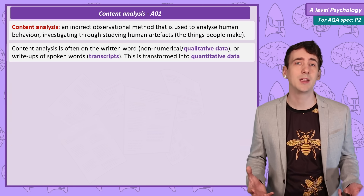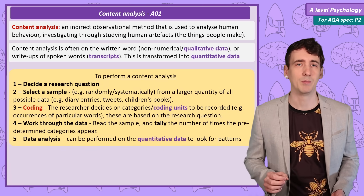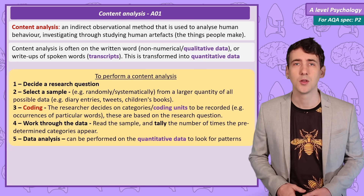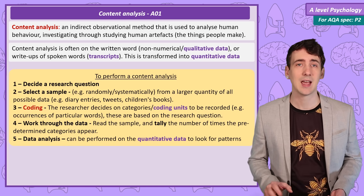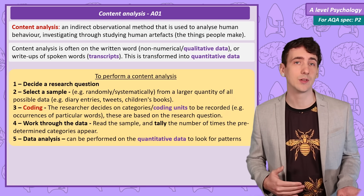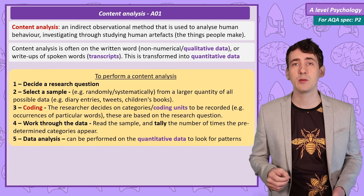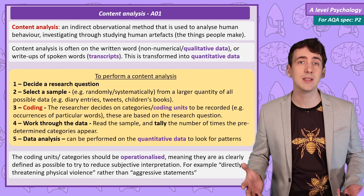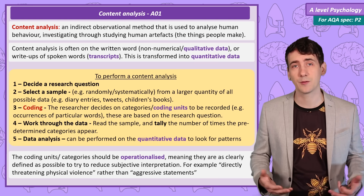To start a content analysis you begin by deciding the research question and then selecting an appropriate sample. So your sample could be a selection of diary entries, tweets, or children's books. You usually won't be able to analyse every possible example, so you'll have to decide how you select your sample. Examples of behavioural recording are called coding units or behavioural categories, and these are linked to your research question. In the same way we discussed in the observation video, they need to be operationalised — defined so they can be as precisely measured as possible — and then recorded in a frequency table.